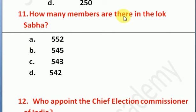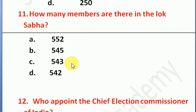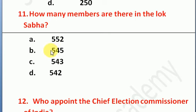Question number 11: how many members are there in the Lok Sabha? Option A: 552, Option B: 545, Option C: 543, Option D: 542. The right answer is 543 elected seats, and total seats in Lok Sabha are 545 — two seats are nominated by the President of India.